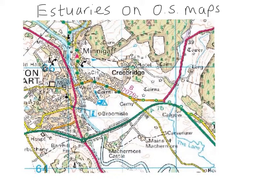Welcome to this tutorial on estuaries on OS maps. An estuary is where the river meets the sea. In this case, an estuary is where the water from the sea — the tide — comes inland and up the river.